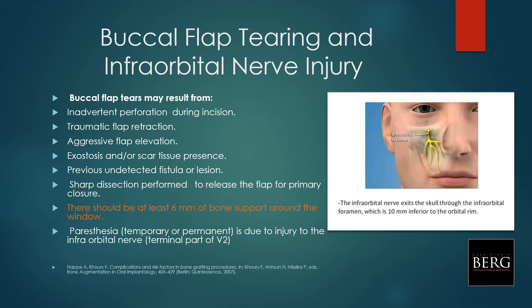The preservation of vascularity is very important since it provides blood to your graft and accelerates angiogenesis and the anabolic process to form bone. Regarding flap and infraorbital nerve injury, this may come from perforation during incision, traumatic or aggressive flap retraction, the presence of prior scar tissue or undiagnosed exostoses, the presence of an unassessed fistula or lesion, or while executing sharp dissection to advance the flap for closure — normally related not only to sinus lift but also to volume correction with grafts.